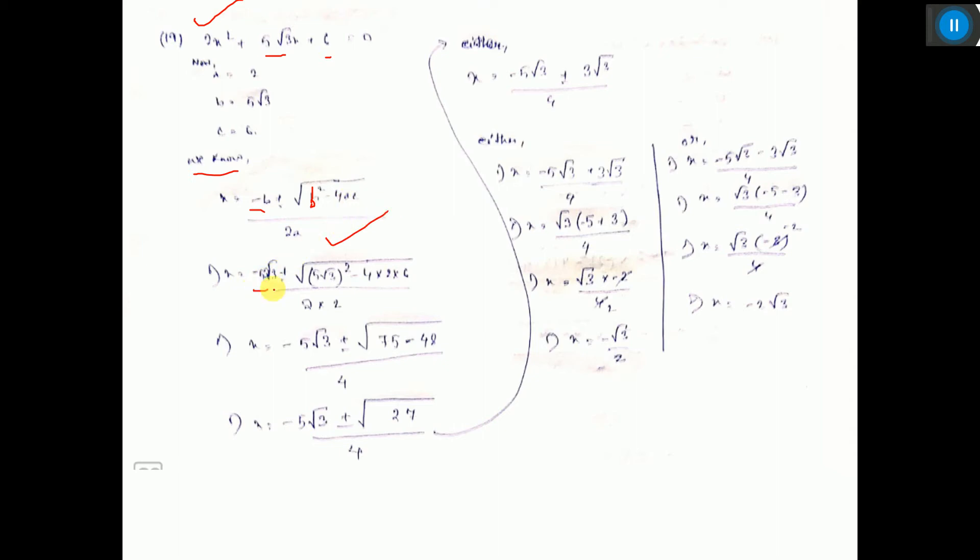Now put the value of b, this is 5 root 3, plus 5 root 3 whole square minus 4 into a means 2 and c means 6.